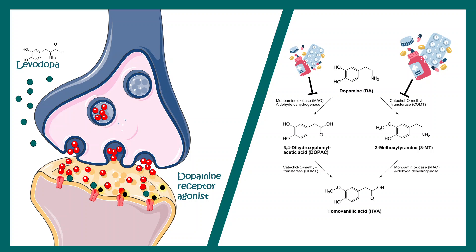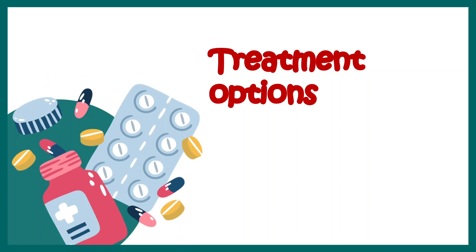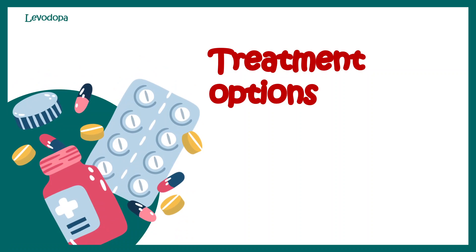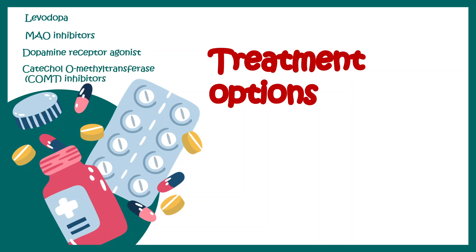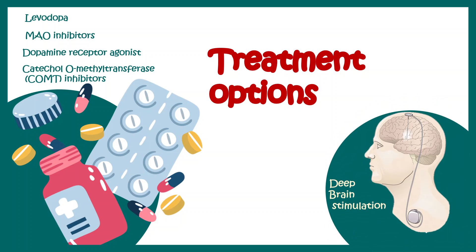All these medications are useful for treating the symptoms of Parkinson's and can improve cognitive output. Treatment options include levodopa, monoamine oxidase inhibitors, dopamine receptor agonists, and COMT inhibitors. Some drugs prevent dopamine degradation, making dopamine more persistent in the synaptic cleft. For advanced stages with severe cognitive defects, surgical implantations like deep brain stimulation may also help.